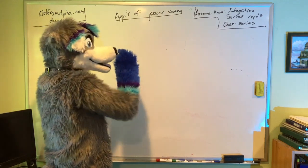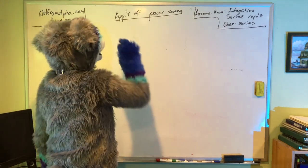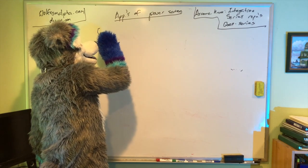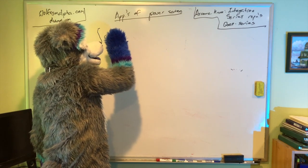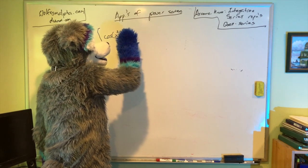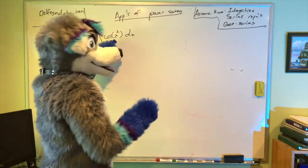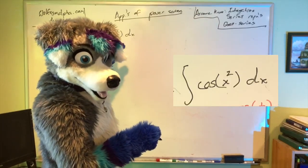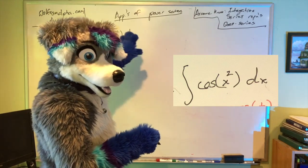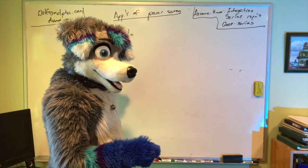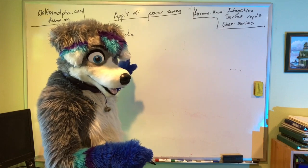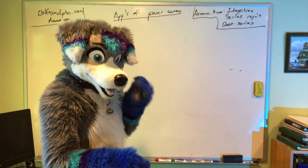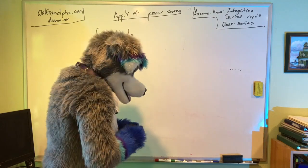One example is that power series can help us integrate things. For example, let's integrate the cosine of x squared. Notice the squared is inside the parentheses, not on the cosine — if it were on the cosine, that'd be an easy trig formula. Using the methods you know from Calculus 2, you cannot integrate this. But we can use power series to help us out.